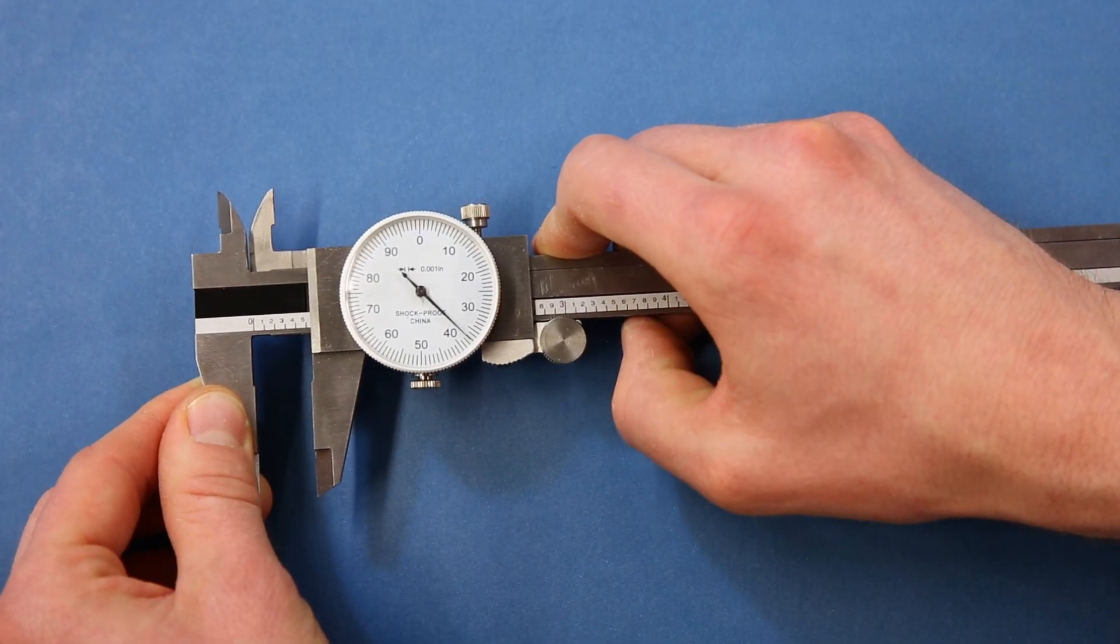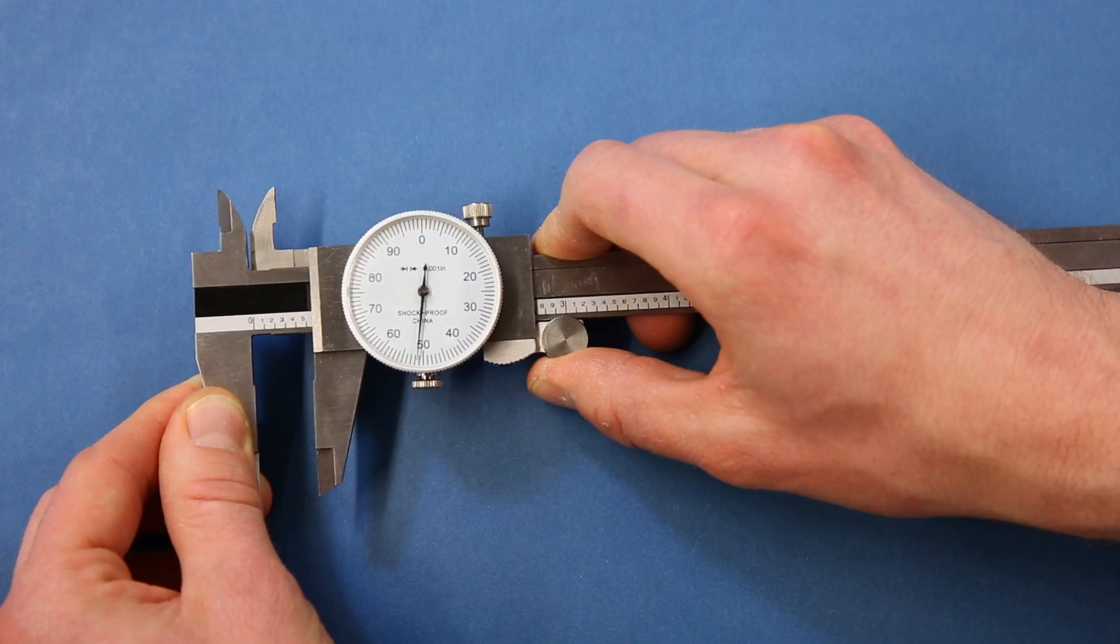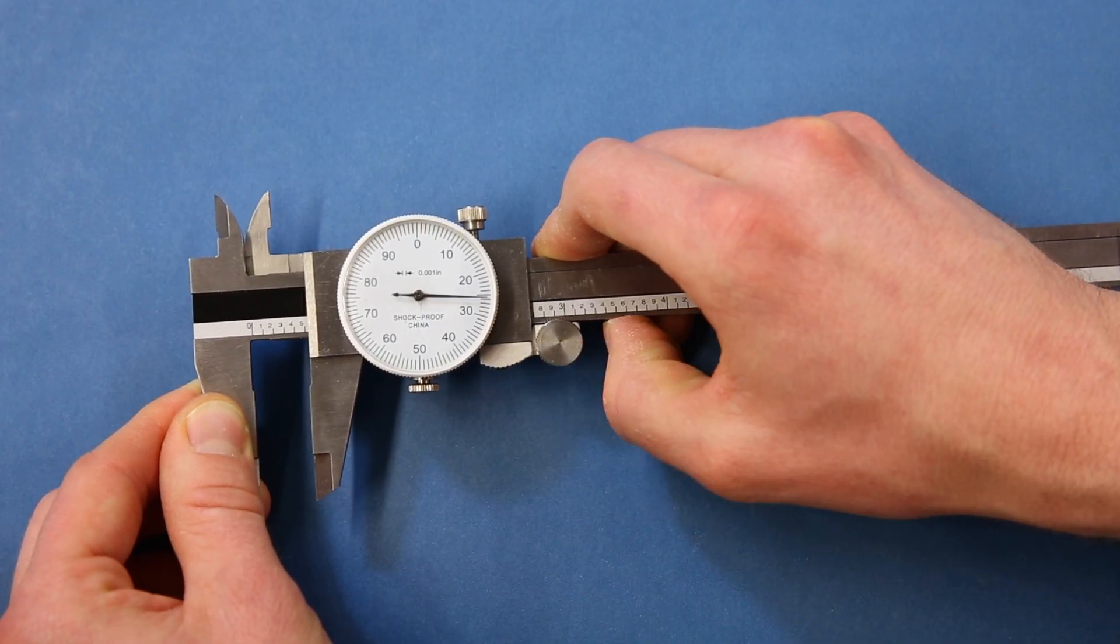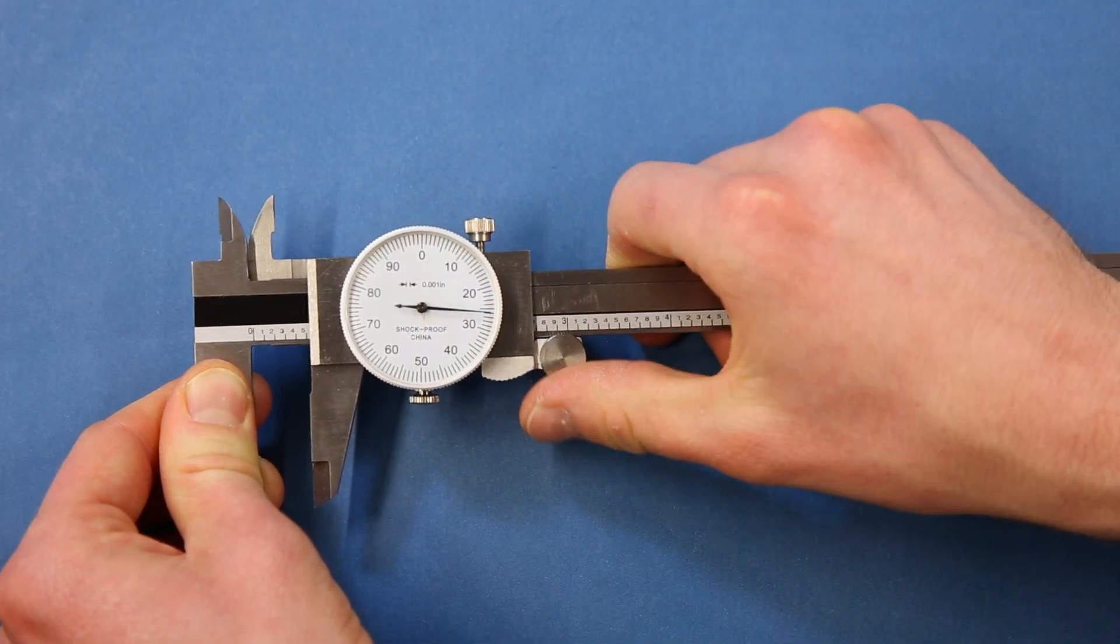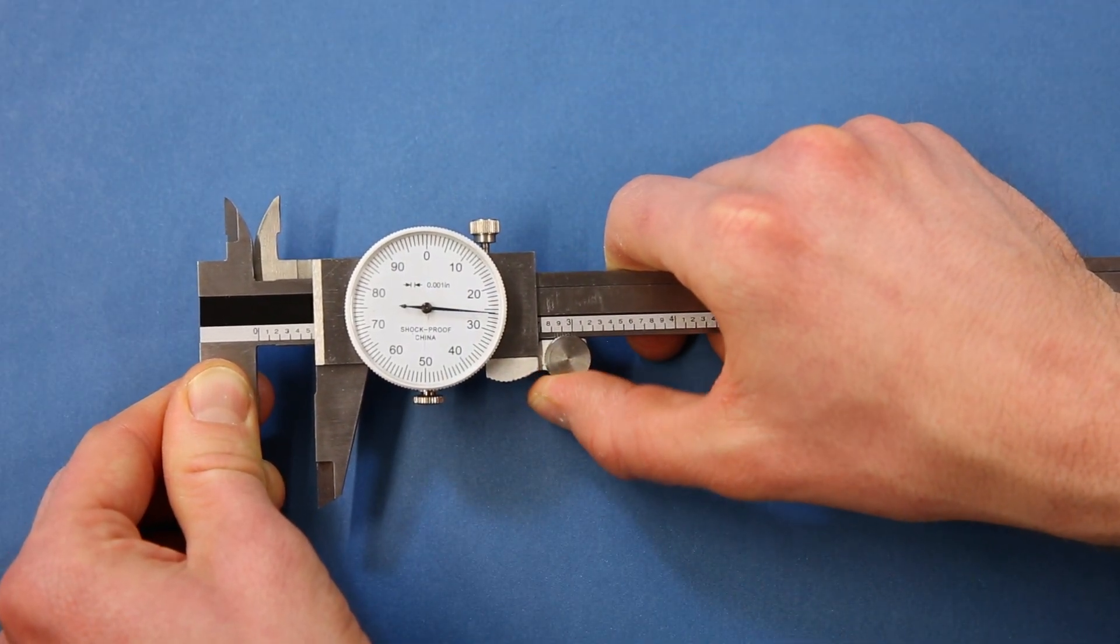Many calipers have a thumb wheel that gives you more precise control over how the slider moves, and most calipers include a lock screw you can tighten to prevent the slider from moving to hold the last measurement taken.